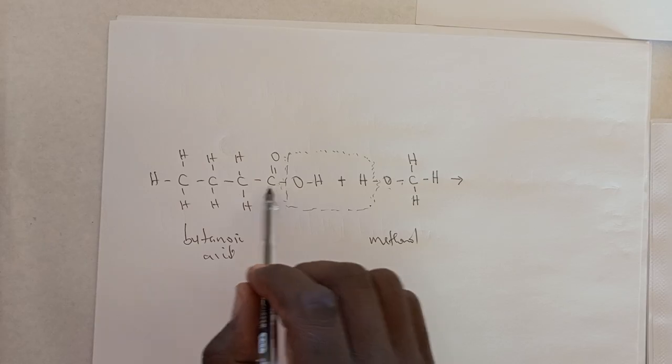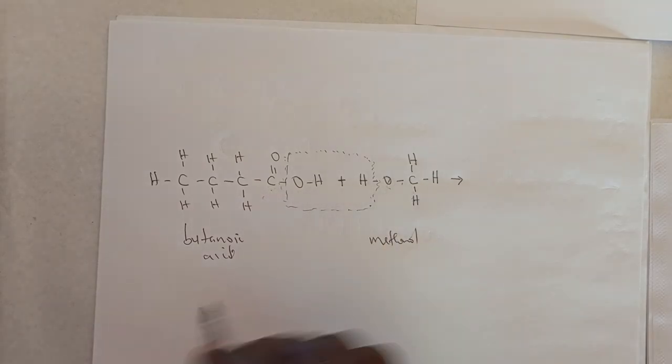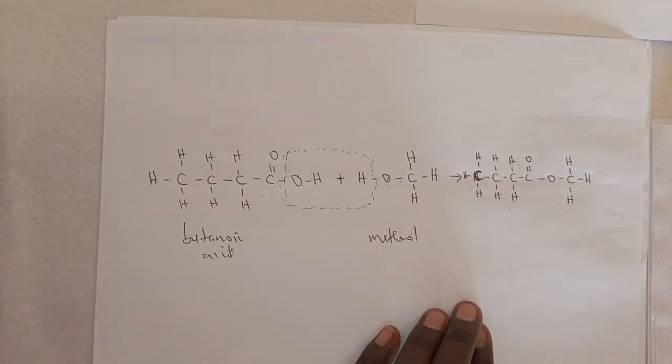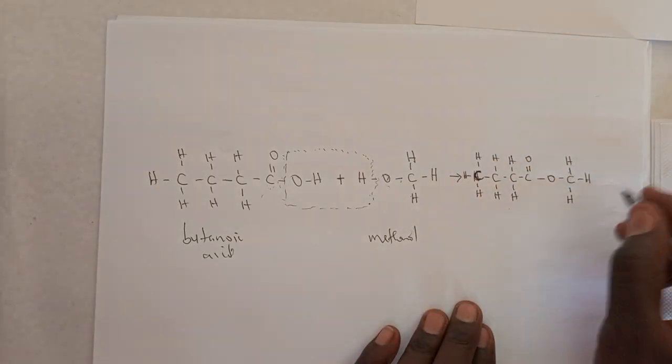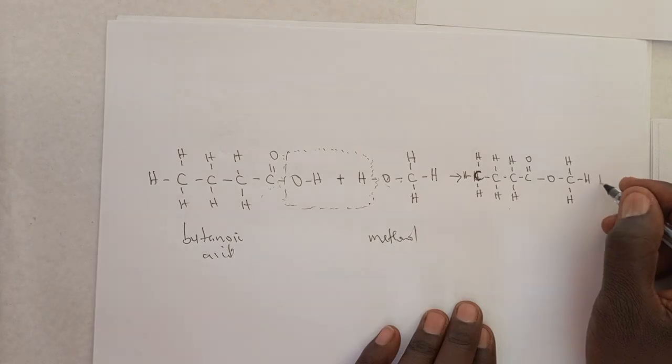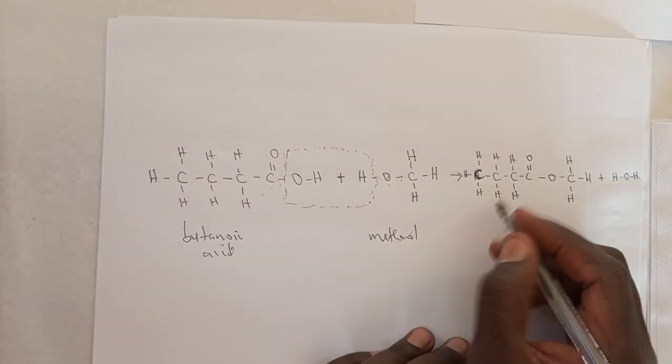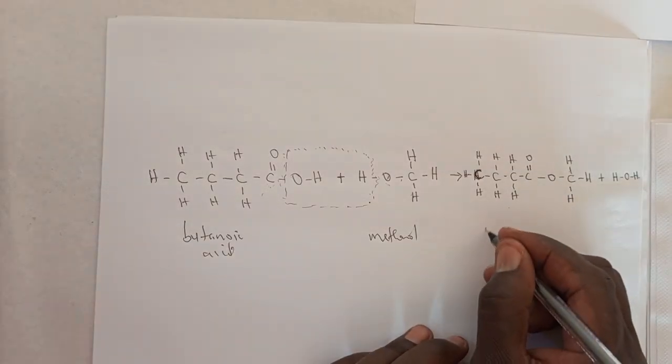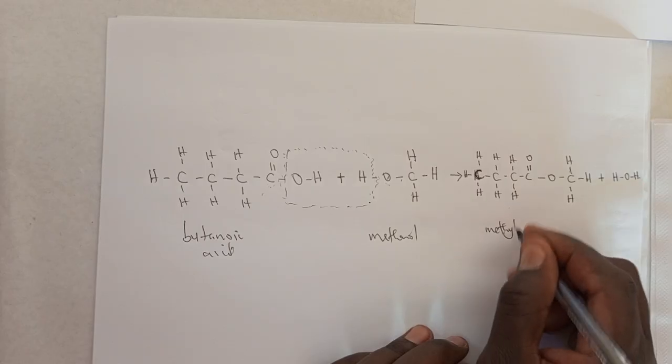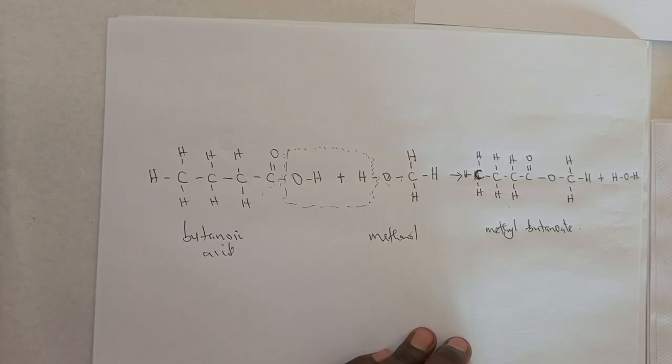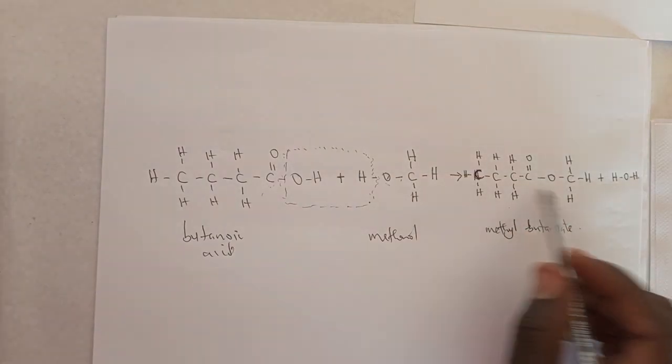What you need to understand is that these will be bonded together and form a water molecule. Then these will be bonded together by a linkage called an ester linkage. This is what is going to be produced, plus water. This is what we're calling methyl butanoate.